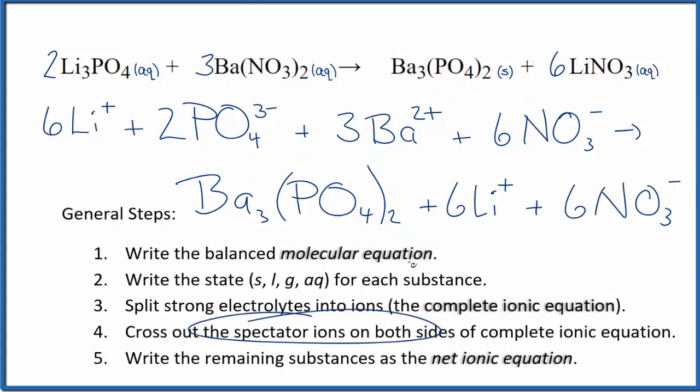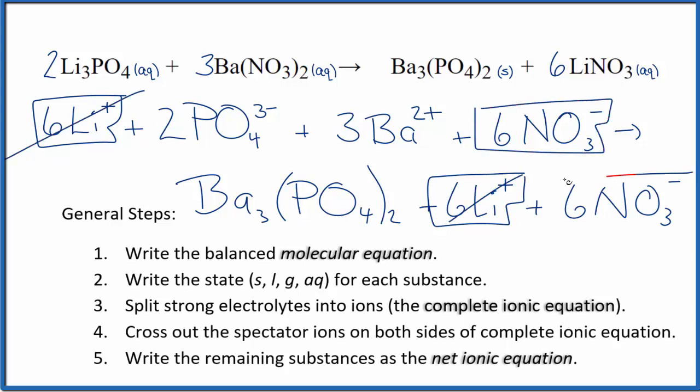Now we're going to cross out the spectator ions. They're on both sides. So in the reactants, I see there are six lithium ions here, and again in the product, so they haven't changed. Those are spectator ions, we cross those out. Reactants, six nitrate ions, and again in the products, spectator ions, we'll cross them out.